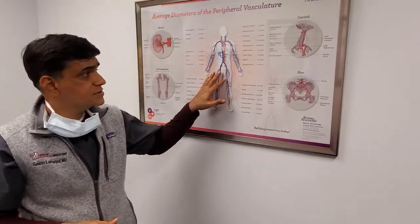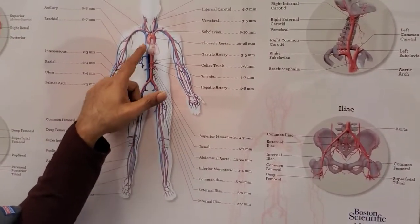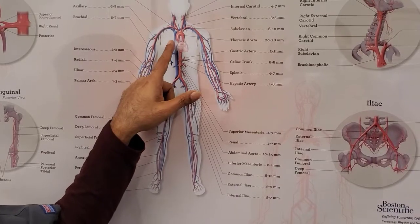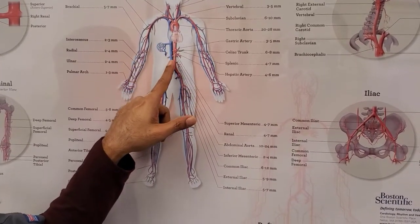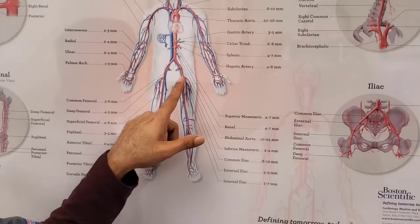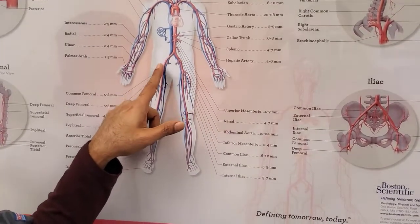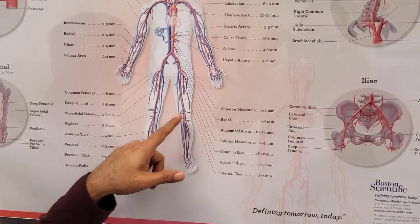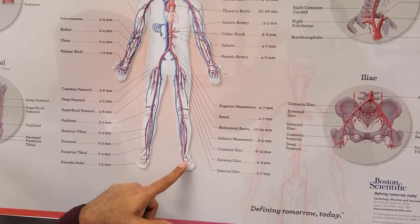If you look at this pictogram or the depiction here, this is your heart. It gives rise to this big red pipe called the aorta, which is bringing good blood from the heart into the chest and the belly. The belly divides into the right and left groin branches, also called the iliac arteries, then continues down into the thigh, then behind the knee and below the knee as these three red pipes which supply the foot.